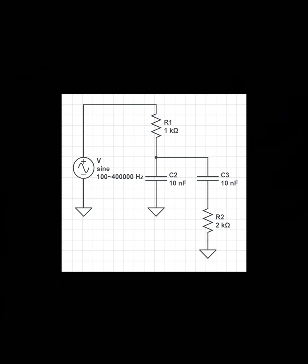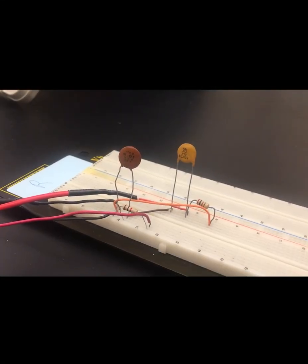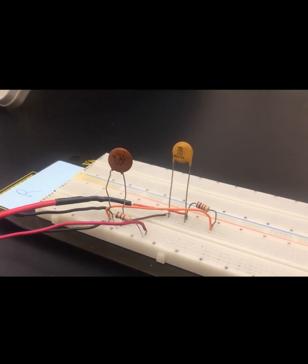This is the circuit diagram that shows how we connect two filters in series with corresponding components based on our calculation. Now we actually build the circuit according to the circuit diagram.